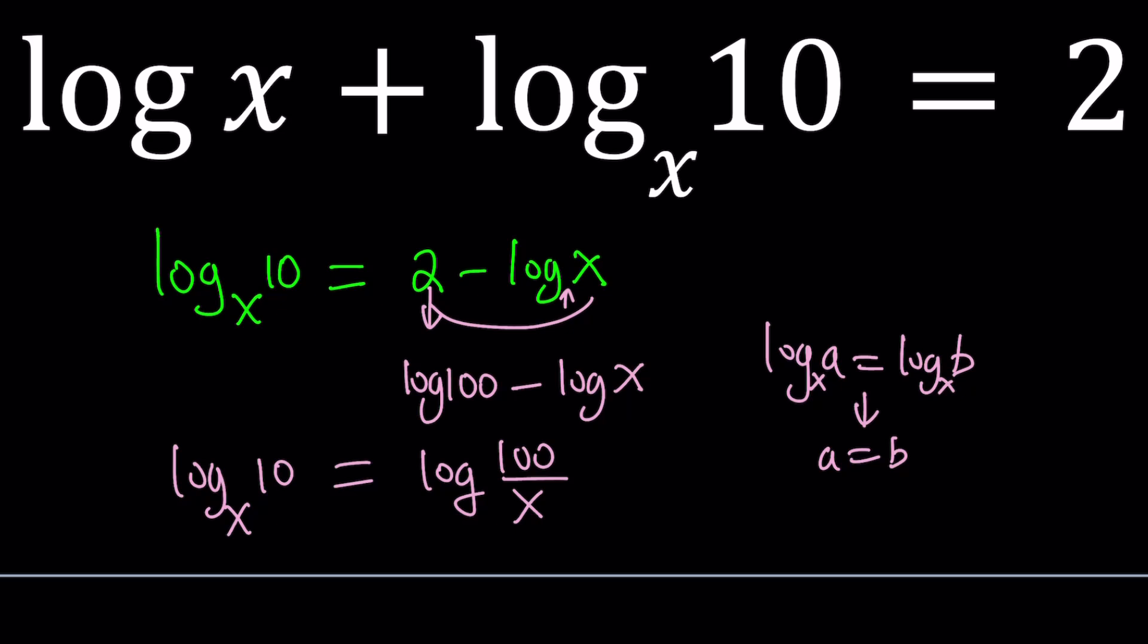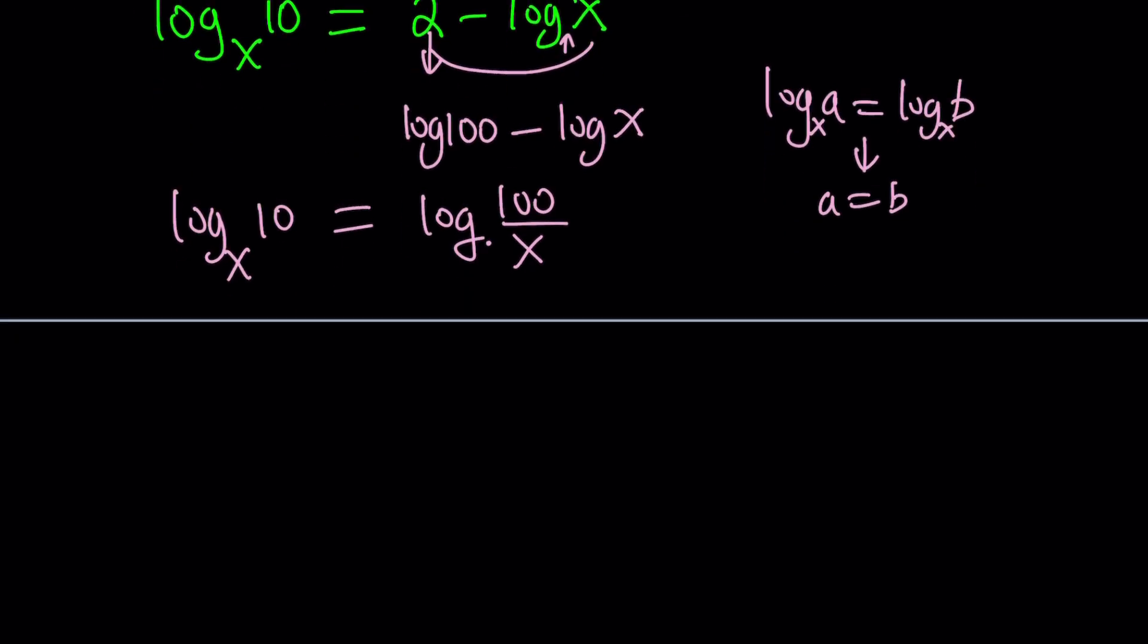But here, we have different bases. This is base x, this is base 10. So, how do we handle this? We could use the definition for log. Whenever you have log a with base x equals b, this means x to the b equals a. That's the rule for logs, that's how logs are defined. So from here, we can safely say that x to the power log 100 over x equals 10. We got the variables on the same side.